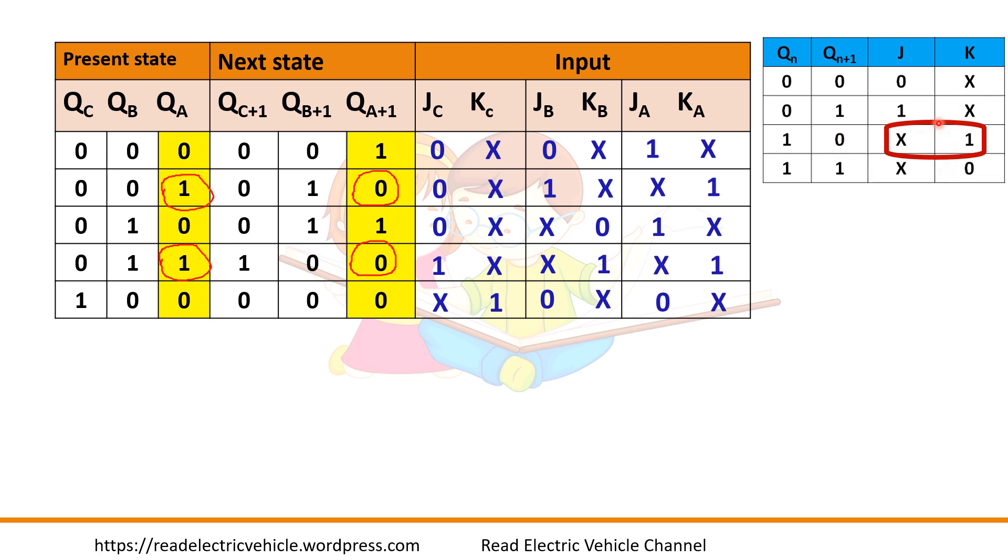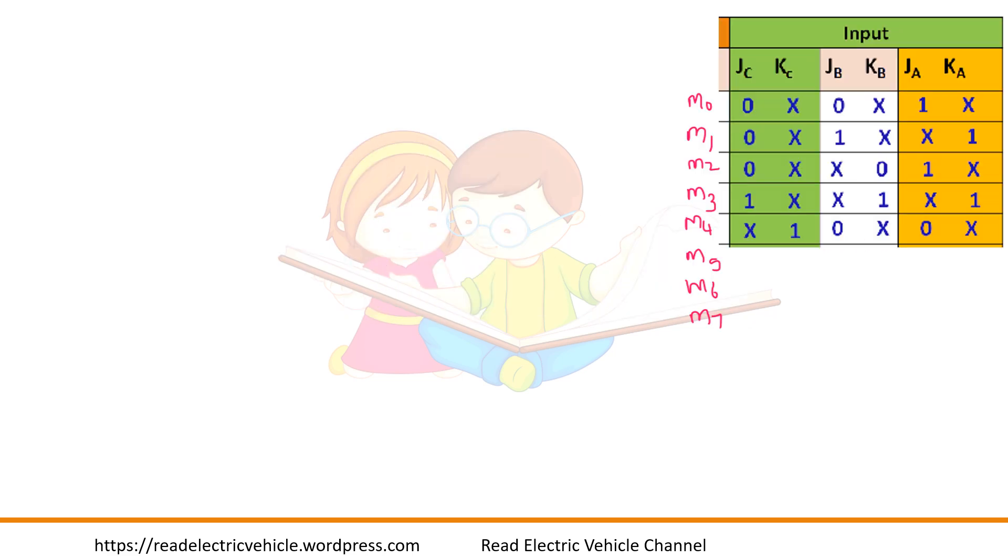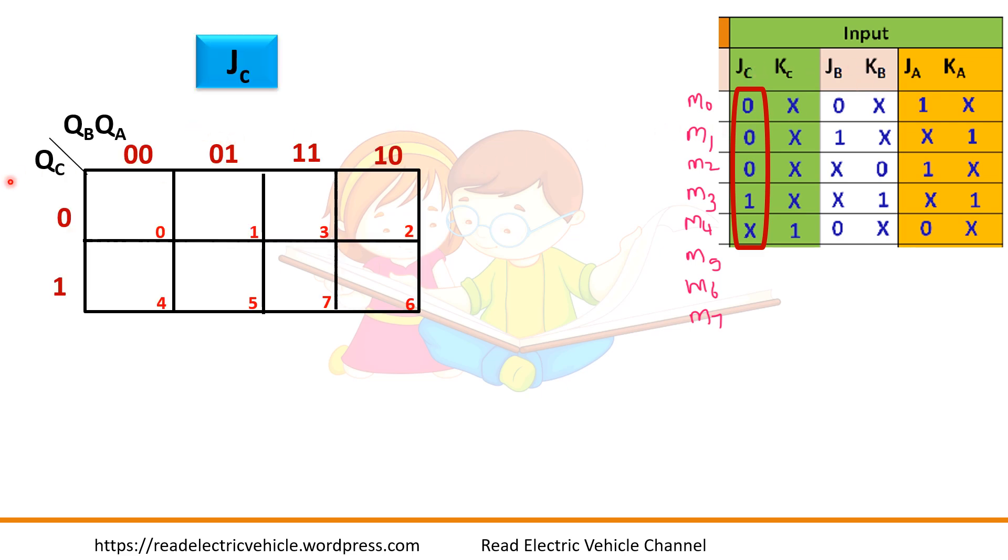So we have filled up the table. Now we need to plot the K-map. Let us draw the K-map. We have three variables, so three variable K-map we can use: QC, then QB, QA. I have taken in this order. You see here m0, m1, m2, m3, m4 has value. m5, m6, m7 I am going to take it as don't care.